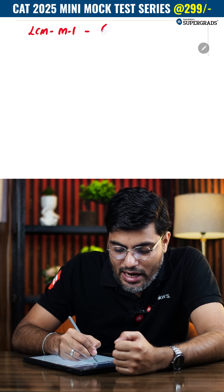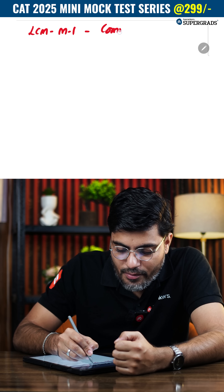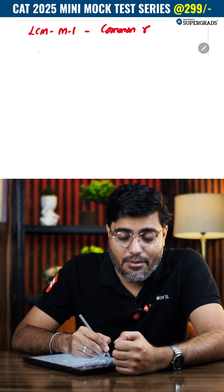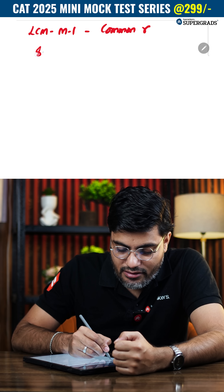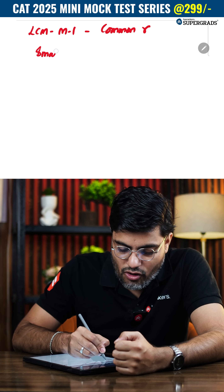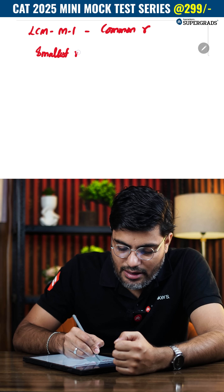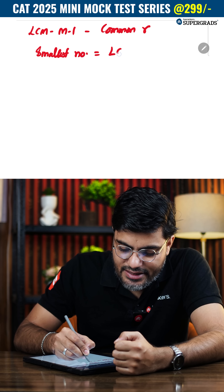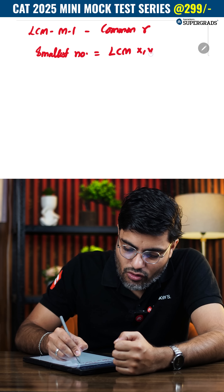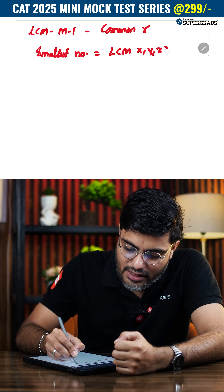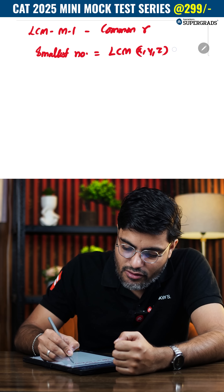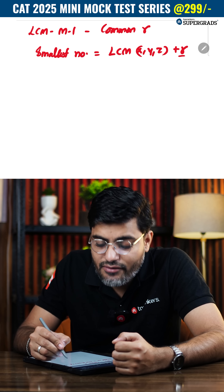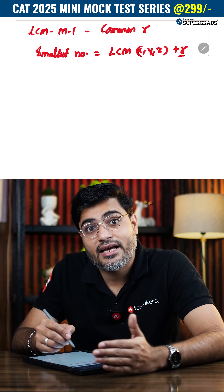LCM Model 1: If you have a common remainder, the smallest number will be LCM(x, y, z) plus that common remainder, because this is the error which we generate after calculating the LCM.